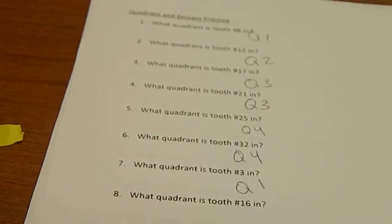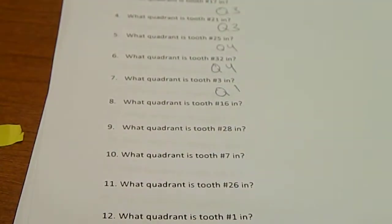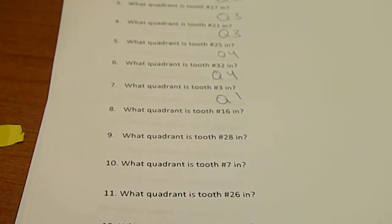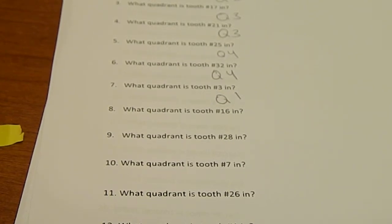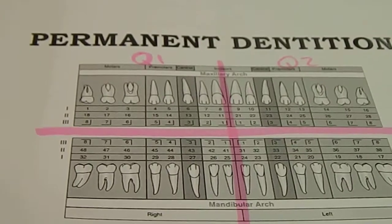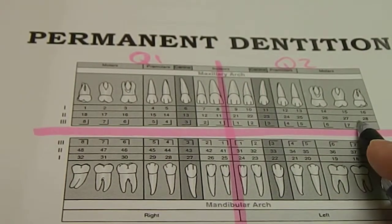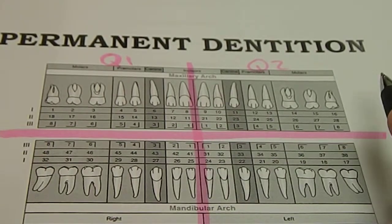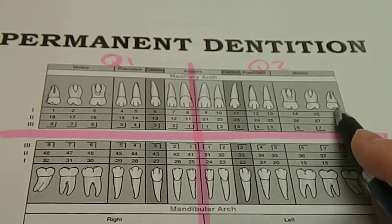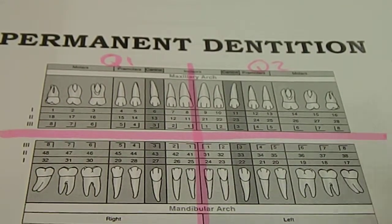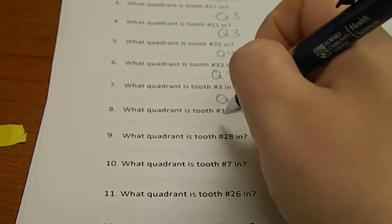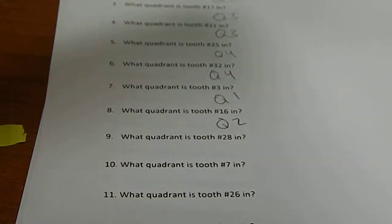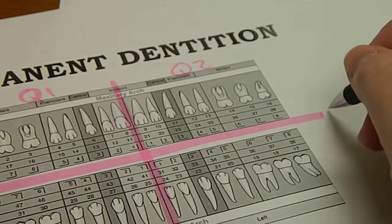We'll do one more and then we'll get into sextants. What quadrant is tooth number 16 in? Tooth 16 is the very last tooth on the maxillary arch, so it's got to be on the left. Tooth 16 is our third molar, so it's in quadrant number two.